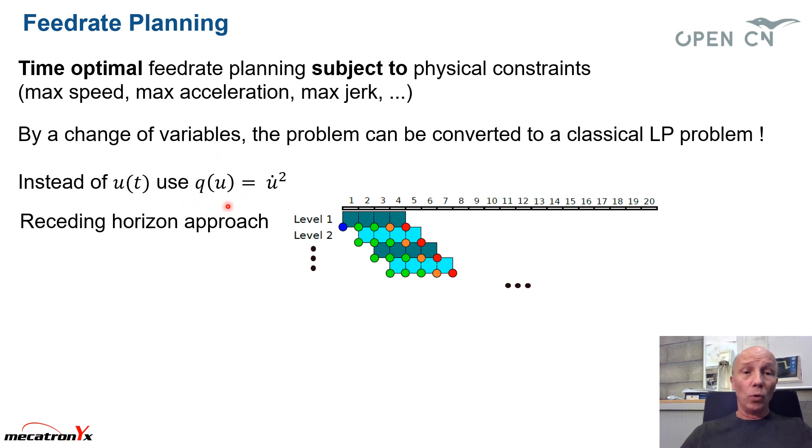It is well known in literature that if you do a change in variable, which means that instead of using u of t as an unknown function, if you use this one here, q of u, where q means u dot squared. So with this new function, you end up with a convex optimization problem and even more, you end up with a classical linear program, which can be solved in a very elegant way.